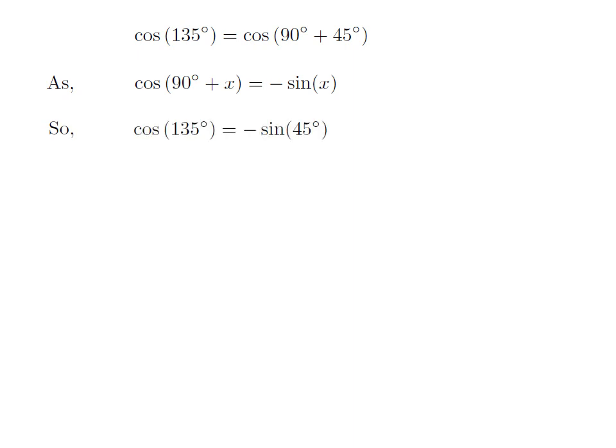Let us apply the above identity for cosine of 135 degrees. Here x is 45 degrees, so cosine of 135 degrees is equal to minus sine of 45 degrees.